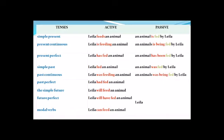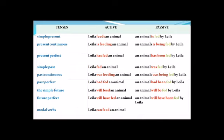Past perfect: 'Layla had fed an animal' → 'An animal had been fed by Layla.' Simple future: 'Layla will feed an animal' → 'An animal will be fed by Layla.' Future perfect: 'Layla will have fed an animal' → 'An animal will have been fed by Layla.'